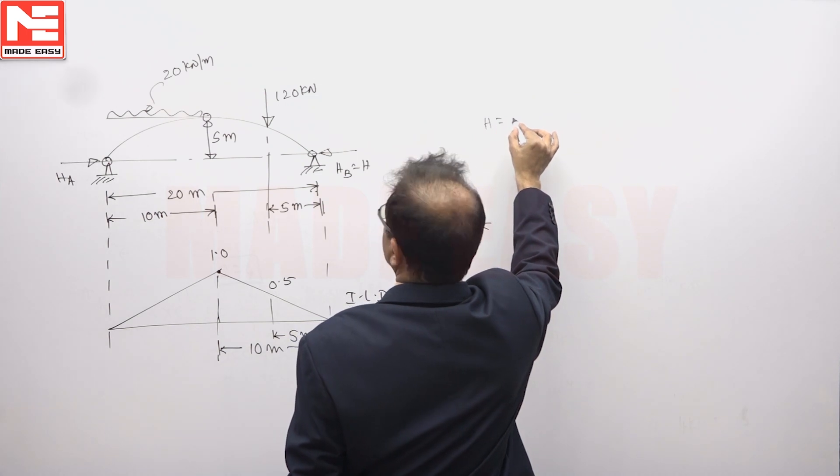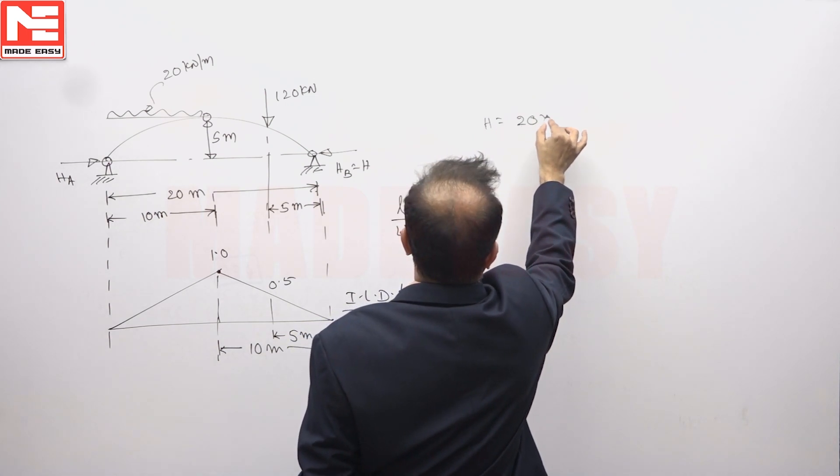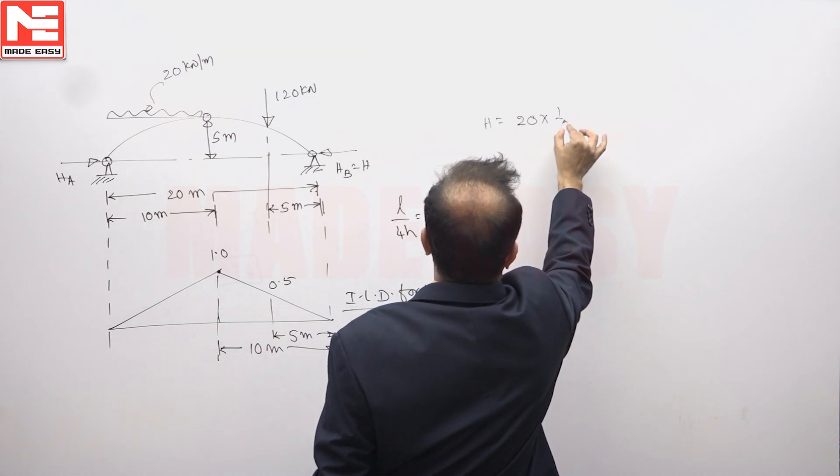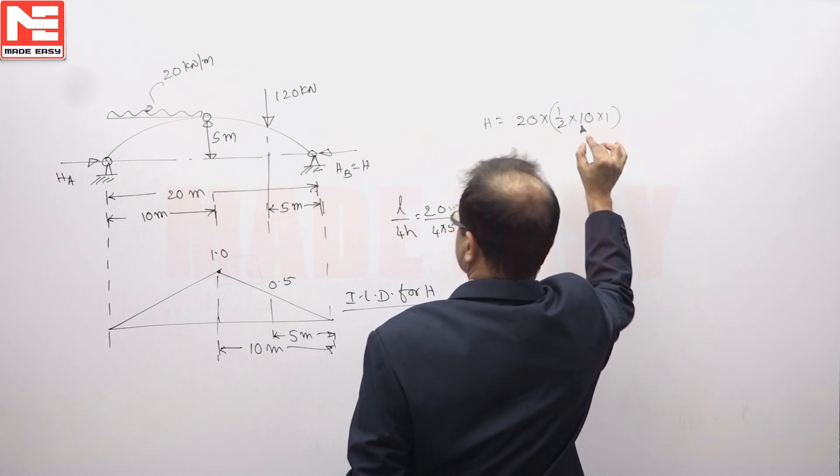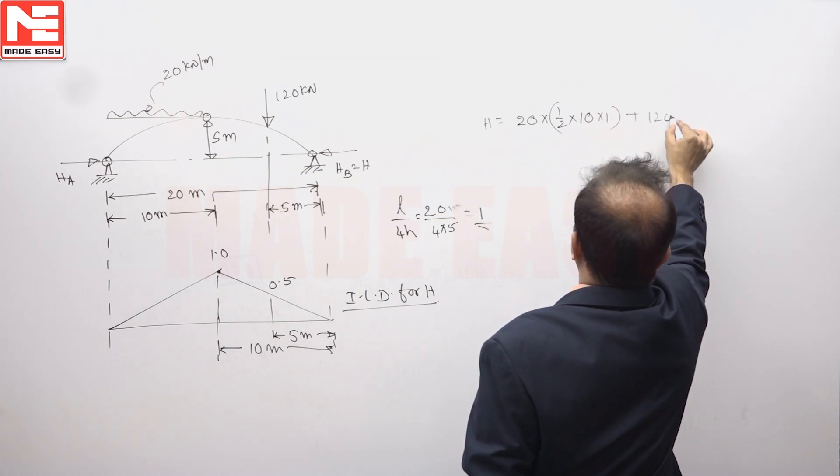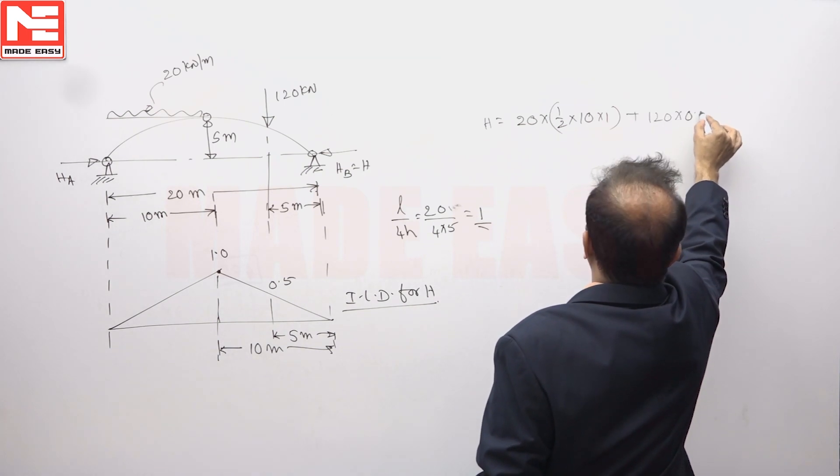H is equal to intensity of UDL into area of ILD half, base is 10, height is 1 plus 120 into 0.5.